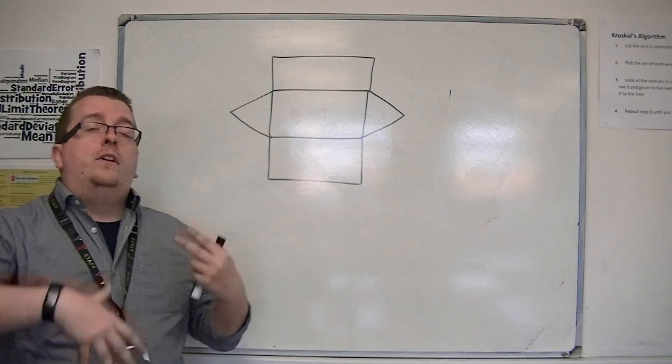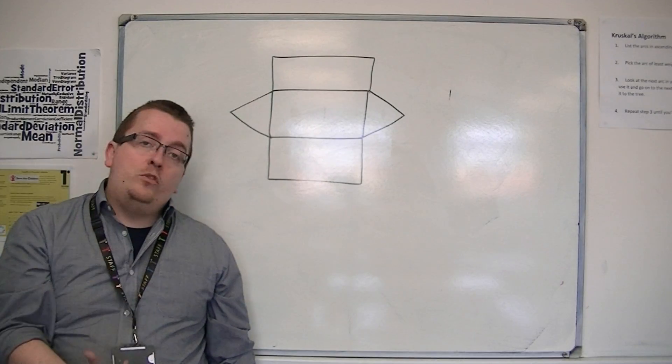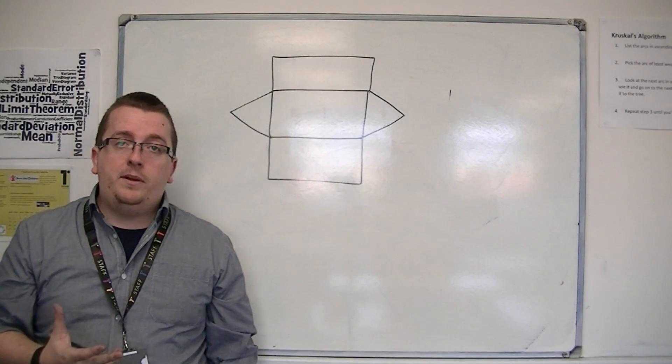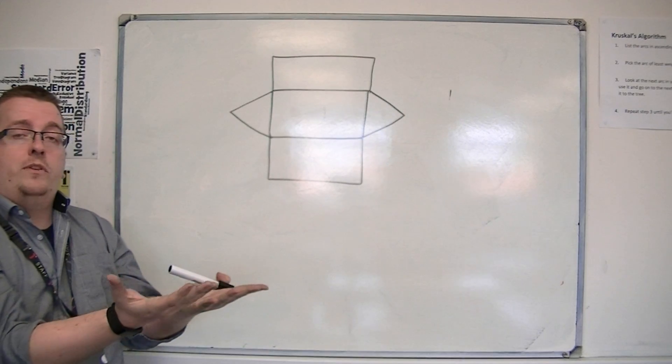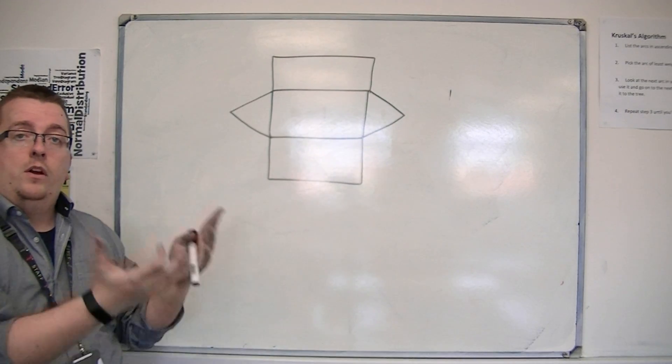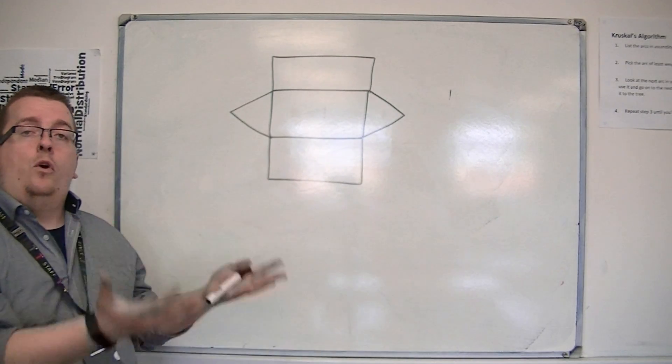So these are nets. In some cases, you have to draw them accurately in the exam on squared paper. But just think of it as imagining the 3D shape unraveled. What would the dimensions be? What would it look like?